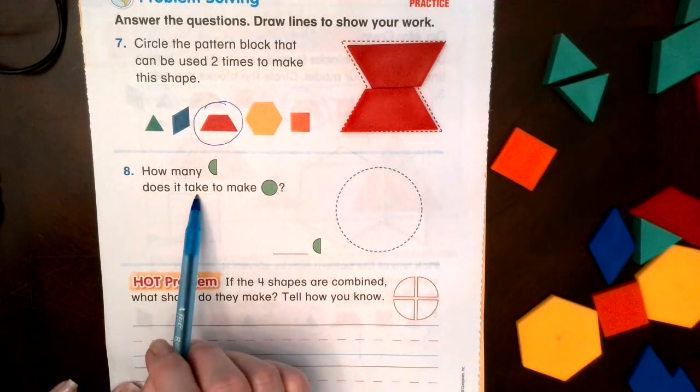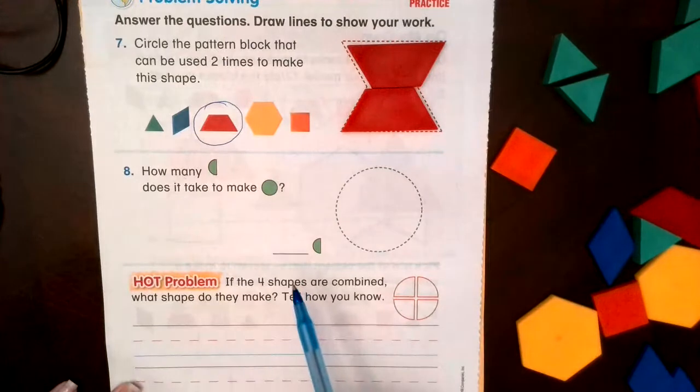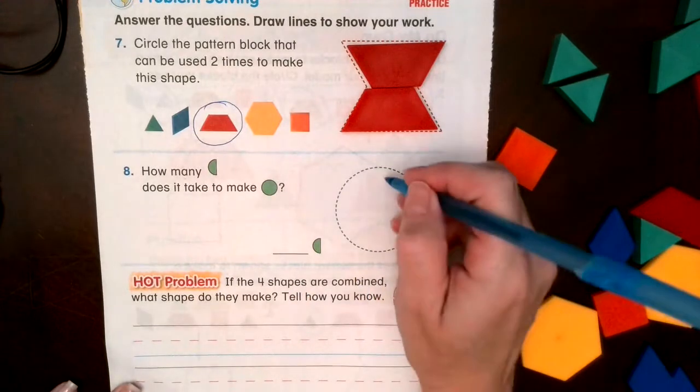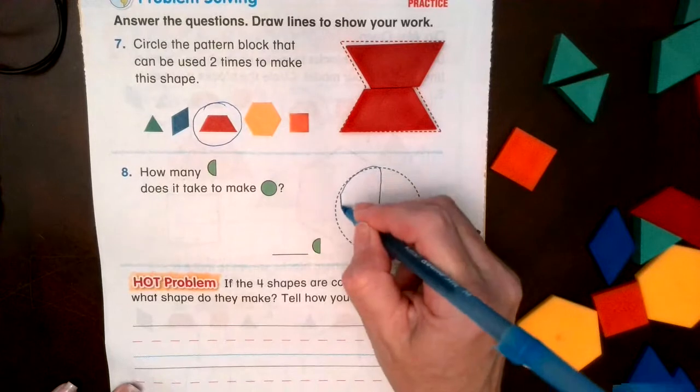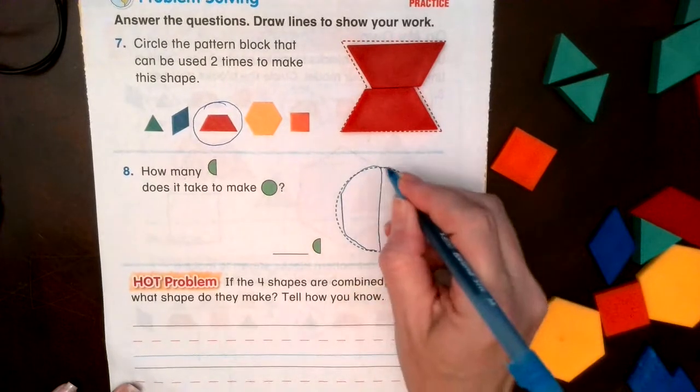How many half circles does it take to make a full circle? I don't have any half circles, but if I were to draw a line down the middle, I can see this is one half circle and this is the other half circle.